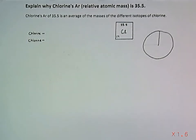Hello, have you ever looked at chlorine in the periodic table and wonder why it has a peculiar relative atomic mass of 35.5, while the other elements have a whole number?